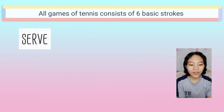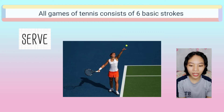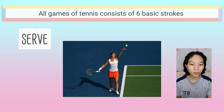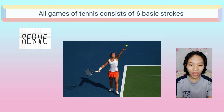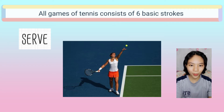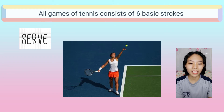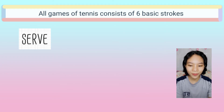Serve. A serve in tennis is the stroke used to start every point in a match. It is the only stroke in tennis that a player has complete control over and is therefore one of the most important shots in the game. A good serve allows the player serving to assert some control over how the point unfolds, because the server gets the first strike — based on power, spin, and shot placement — which can limit what the returning player can do.